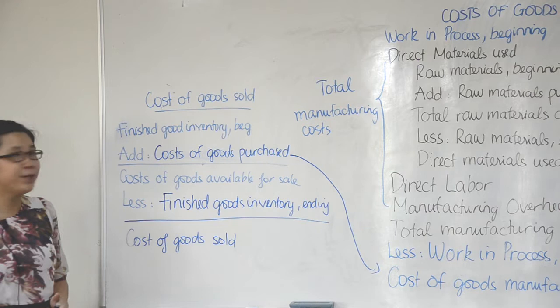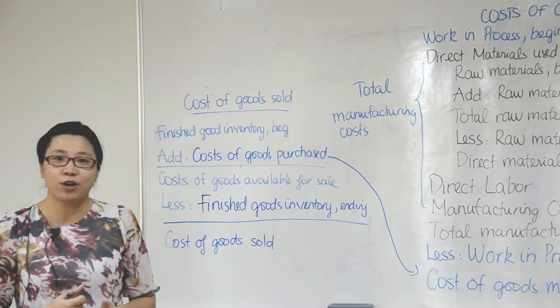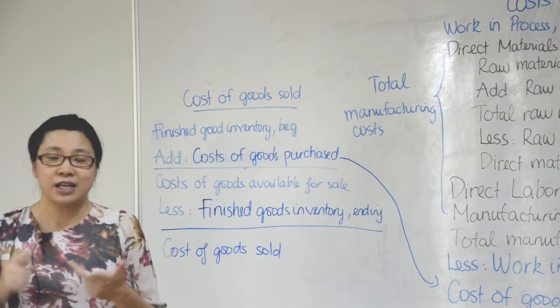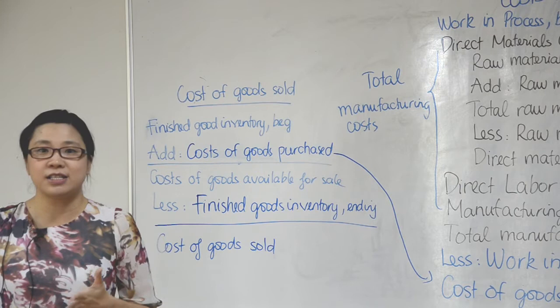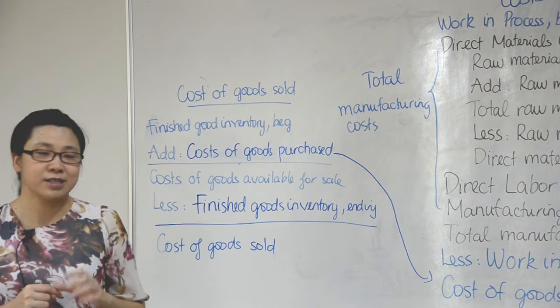Today we're going to look at how to calculate the cost of goods sold for manufacturing companies. Last time we learned about calculating cost of goods sold for a merchandising company — we take beginning inventory plus purchases, which gives us cost of goods available for sale, and then we minus the ending inventory to get cost of goods sold. For manufacturing companies, it will be a little bit different.